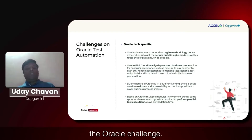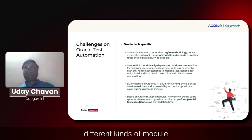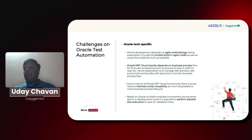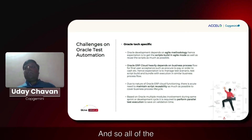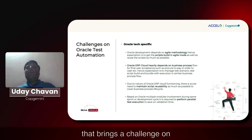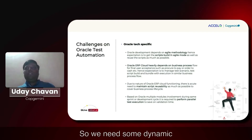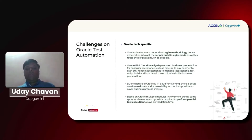Another challenge is that all different module users try to perform testing at the same time — there's a big bang approach and a wave-by-wave or phase-by-phase approach. All modules need to be tested before you exit from one phase to another. That brings the challenge of parallel testing being very important. In the cloud and Agile world, timelines are getting shorter and testing is changing too. We need dynamic accelerators that can perform barrier testing very quickly, with real agility.